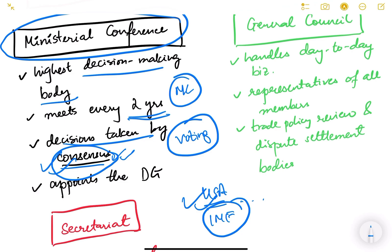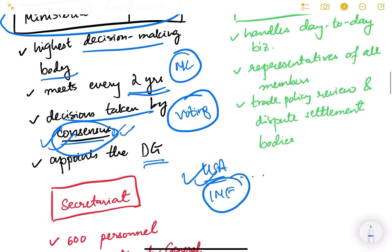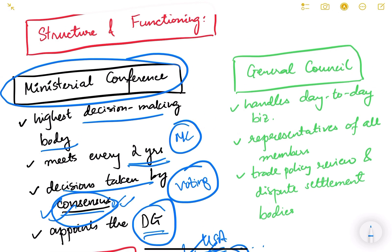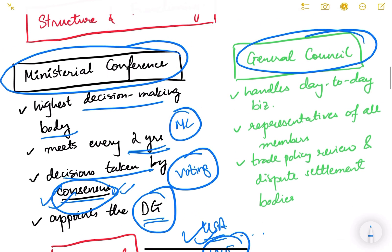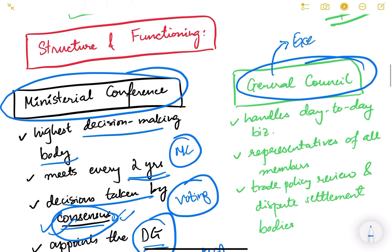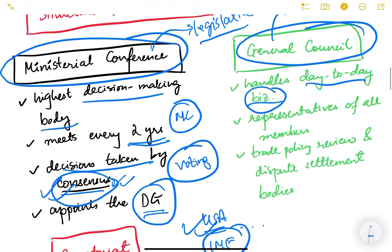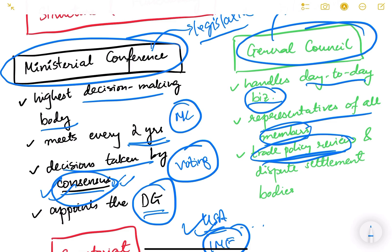The Ministerial Conference appoints the Director General, who is the administrative head of WTO. The next body is the General Council, which is the executive body of WTO — it handles day-to-day business and has representatives of all members. Two main functions of the General Council are: first, trade policy review of countries — checking whether any country is applying discriminatory policies; and second, dispute settlement between member countries.